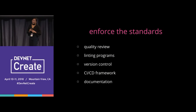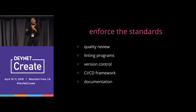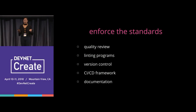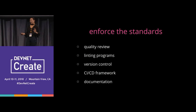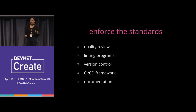Finally, enforce the standards. Quality review, peer review, code — treat your infrastructure just like code. I like to pick two people to do quality review. Linting programs are your best friend. There are a lot of options in Python — you can build your own or use Ruby. I like Food Critic for linting Chef cookbooks.